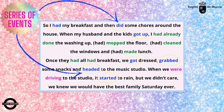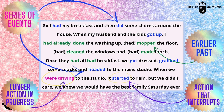Once they had all had breakfast, we got dressed, grabbed some snacks and headed to the music studio — again, past simple to move the action forward, for events that follow one after the other. When we were driving to the studio, it started to rain — this is the typical example of an action in progress with past continuous and another that interrupts it with past simple.